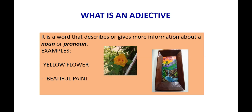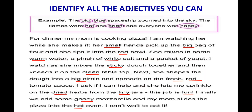Here, identify all the adjectives you can. For example: 'The big blue spaceship zoomed into the sky, the flames were hot and bright, and everyone was happy.' All the words in purple are adjectives — blue, big, hot, bright, and happy.